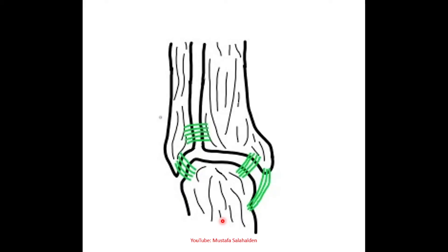Here is the normal anatomy. We have the tibia, the fibula, and the talus bone, which together form the ankle joint. We can see the syndesmosis — the distal tibiofibular syndesmosis — as well as the talofibular ligament between the talus bone and the fibula, and the deltoid ligament between the talus bone and the medial malleolus.